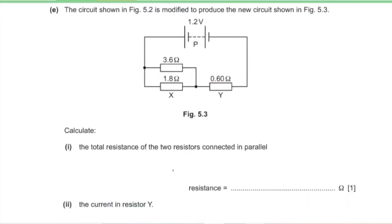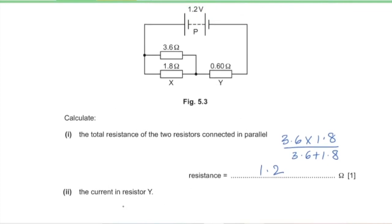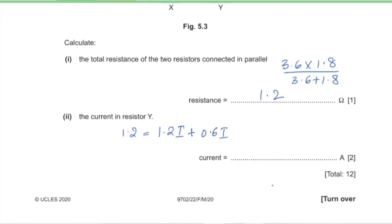Part E: the circuit is modified with two resistors in parallel. Calculate the total resistance of 3.6 Ω and 1.8 Ω in parallel: (3.6 × 1.8) / (3.6 + 1.8) = 1.2 Ω. Part 2: find the current through resistor Y. EMF = (combined parallel resistance × I) + (R_Y × I). Solving: 1.2 = (1.2 + 0.6) × I, giving I = 0.67 amperes through resistor Y.